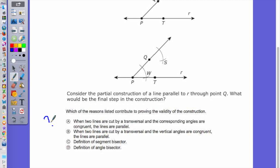When two lines are cut by a transversal, and the vertical angles are congruent, then the lines are parallel. Well, we're not dealing here with vertical angles, right? We're dealing with corresponding angles. I'm not constructing a segment bisector, and I'm not constructing an angle bisector. So the correct answer is A.